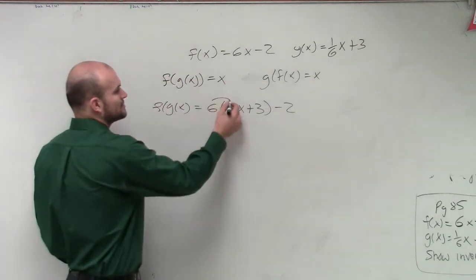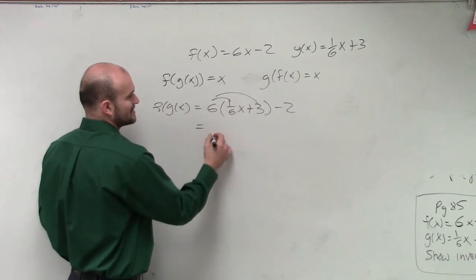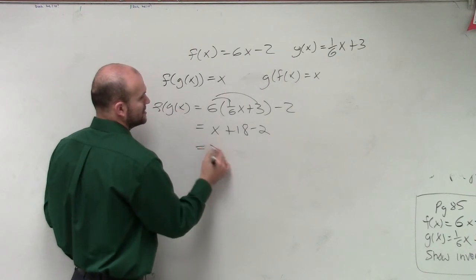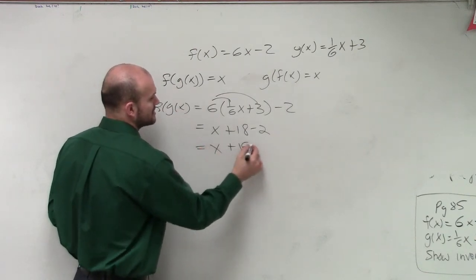So when I apply the distributive property, I get x plus 18 minus 2, which equals x plus 16.